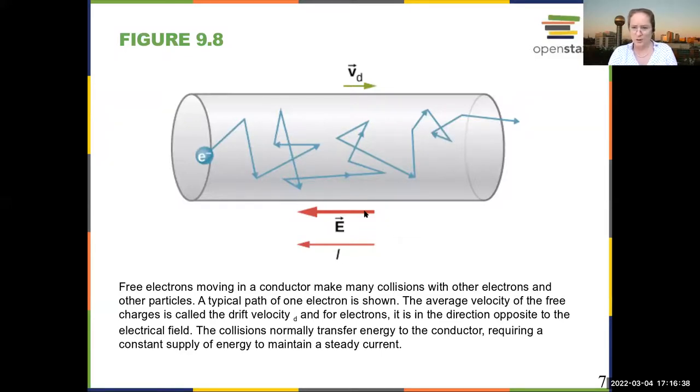We measure current as positive charges moving per second. But of course, the charge carriers are electrons. So if you have an electric field in this direction, then the electrons are going to travel in the opposite direction. Because the current is the direction of positive charges, positive charges moving to the left, mathematically, are the same thing as negative charges moving to the right.